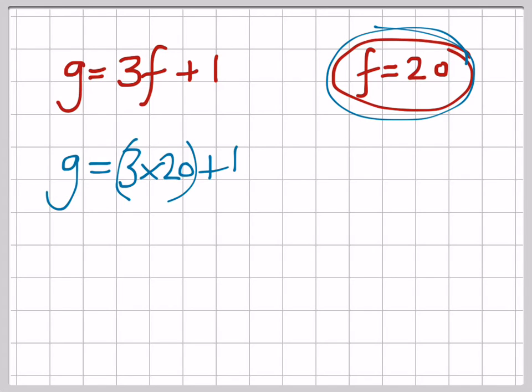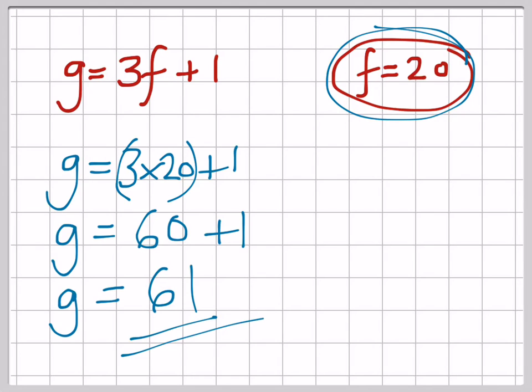So g would equal - well, 3 lots of 20 is 60, add on the 1, so g altogether would equal 61. And there's your answer.